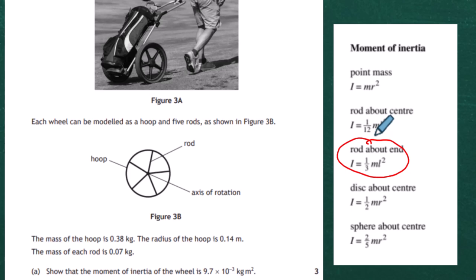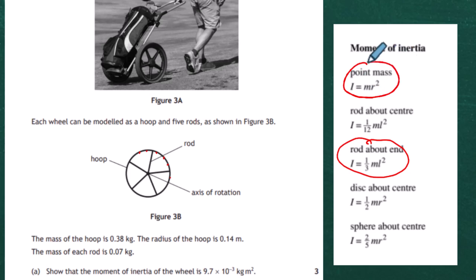The moment of inertia of a hoop is made up of all these little point masses which surround the wheel. The moment of inertia of a point mass is I = mr², so if we sum them all up around the hoop we get the moment of inertia of the hoop equals the mass of the hoop times the radius squared. We're going to use these two expressions for moment of inertia.